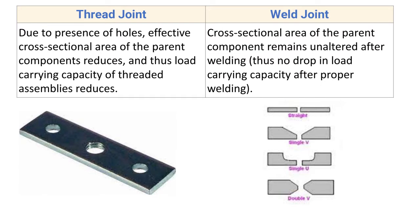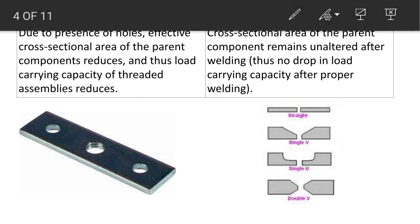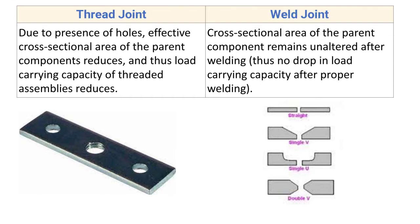Due to the presence of holes, the effective cross-sectional area of the parent component reduces, and thus the load carrying capacity of the threaded assembly reduces. Here you can see the plate being assembled with a thread joint — the cross-sectional area at the hole location is reduced compared to elsewhere. As the cross-sectional area is reduced, its load bearing capacity is also reduced.